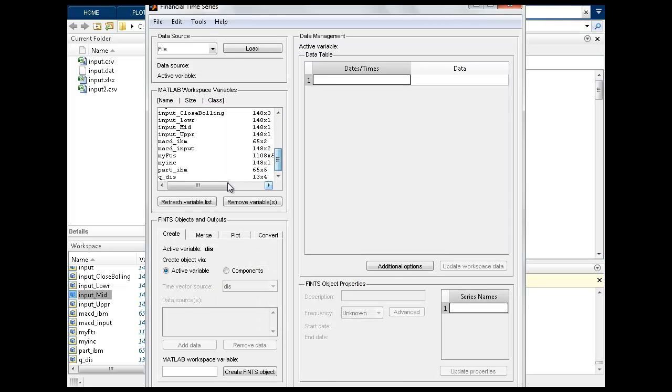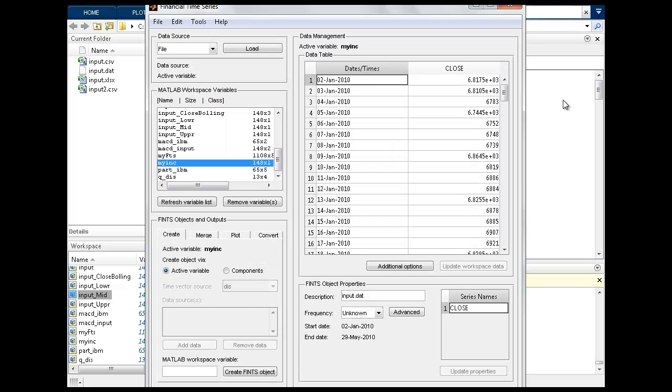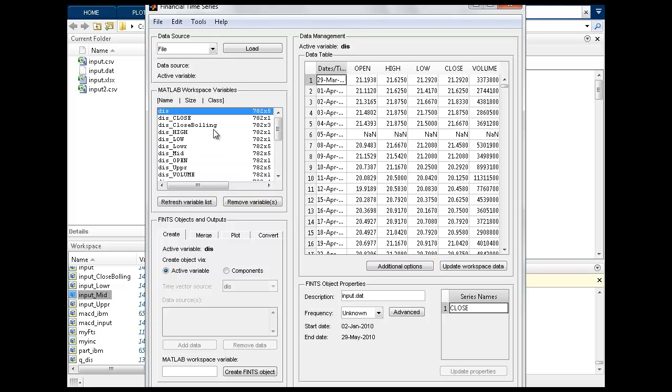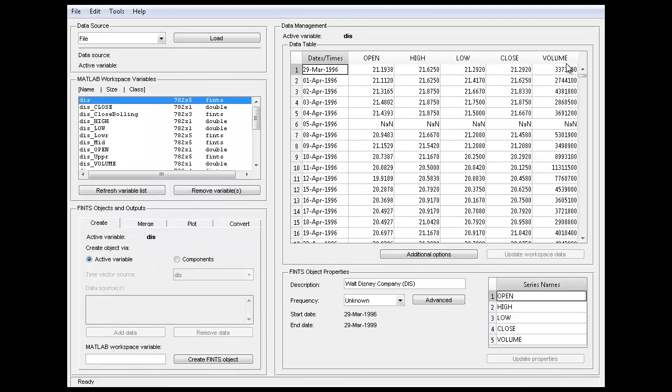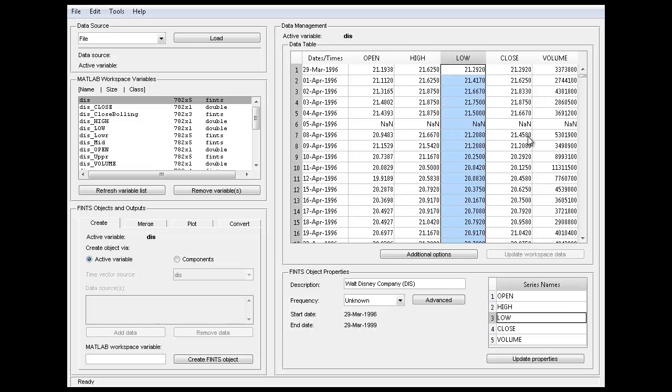If I double click on that, you will have dates and close. If I click on a bigger one, this Disney is given by the MATLAB team themselves, so it will have open, high, low, close, volume. Just be careful while using names here, and you can rename these series.